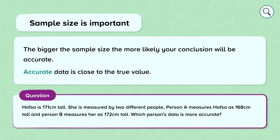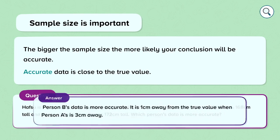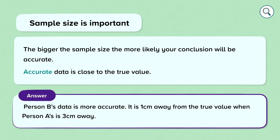So if we have a look at this question. Hafsa is 171 centimeters tall. She is measured by two different people. Person A measures Hafsa as 168 centimeters tall and person B measures her as 172 centimeters tall. Which person's data is more accurate? Person B's data is more accurate. It is one centimeter away from the true value when person A's is three centimeters away.